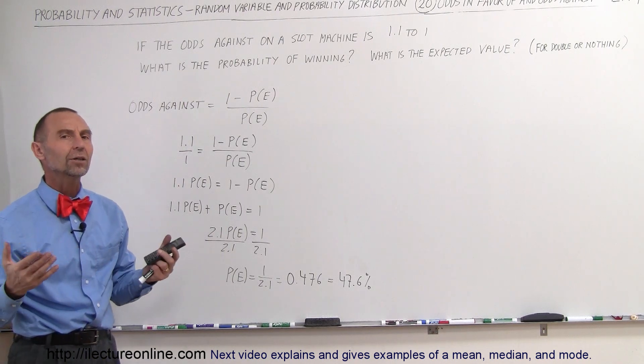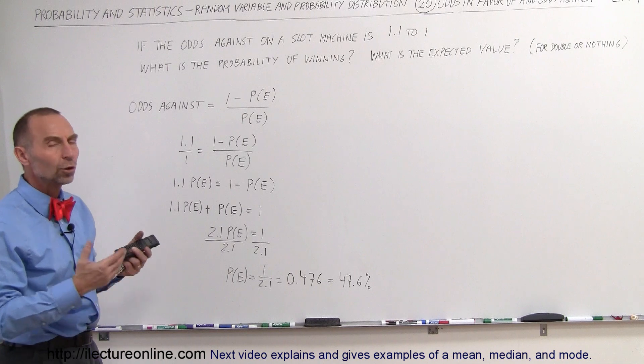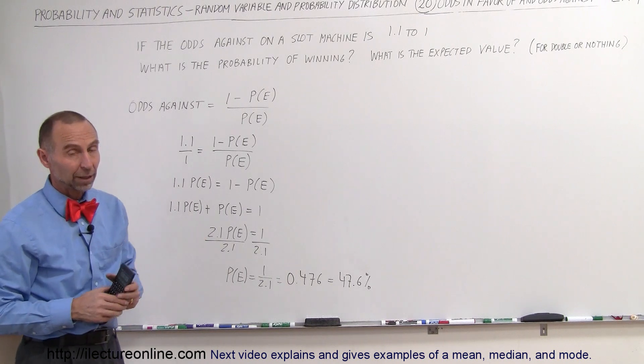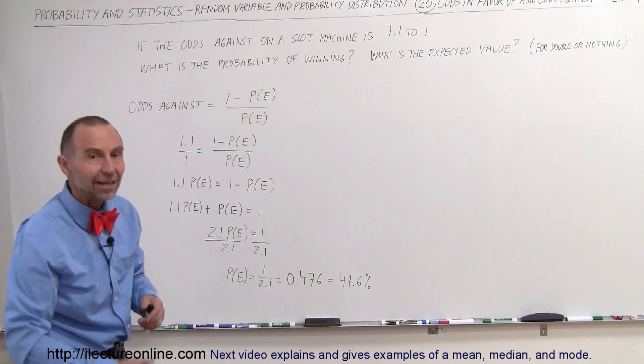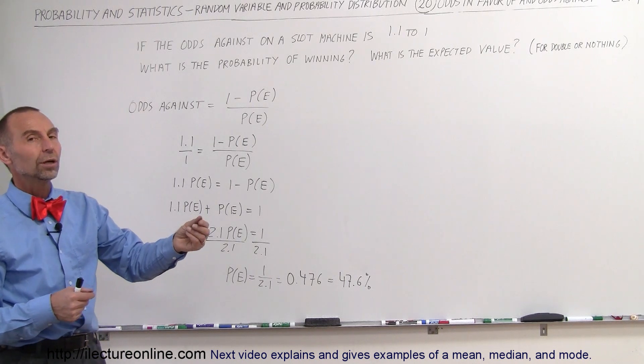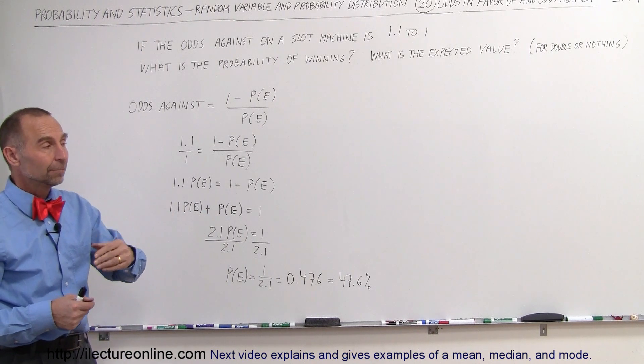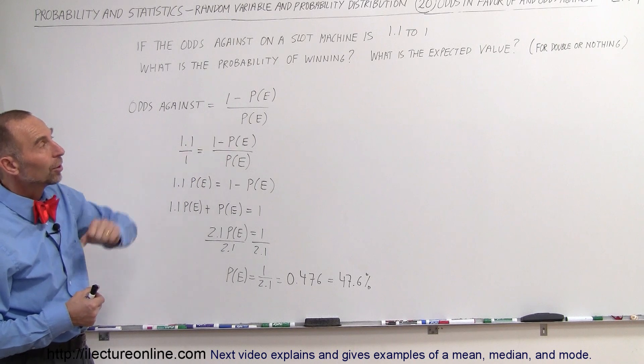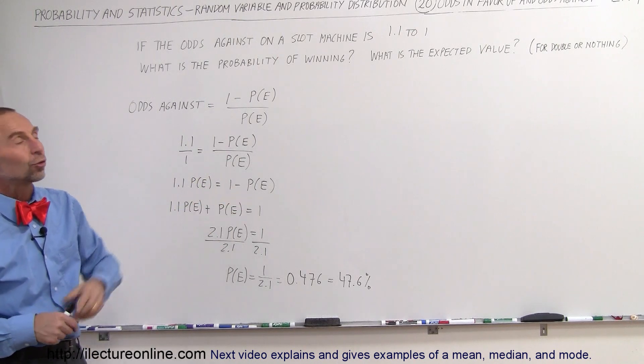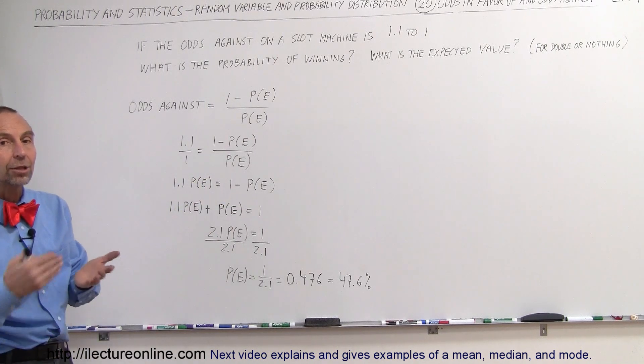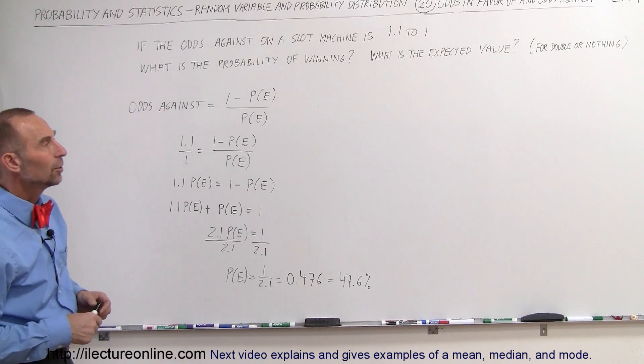So what is the expected value? What can you expect to win or lose? Well, in this case, you're probably going to expect to lose. And if it's, let's say, an even game, meaning if you put in a quarter and you get a quarter back when you win, that's double or nothing. If you put in a quarter and you lose, you lose your quarter. That's basically double or nothing. They'll double your quarter or you get nothing.